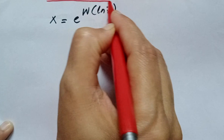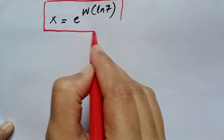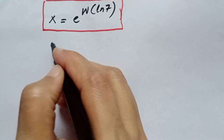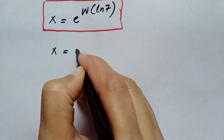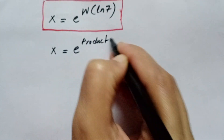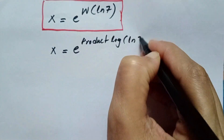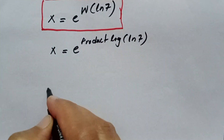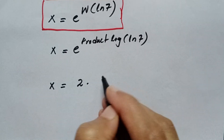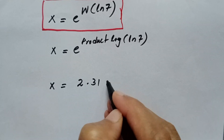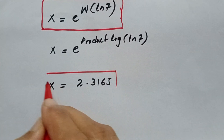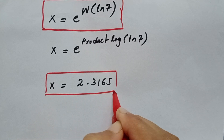If we want to find the approximate value, we can use the product log calculator. Using it, x = e^(W(ln 7)) gives an approximate value of x ≈ 2.3165.